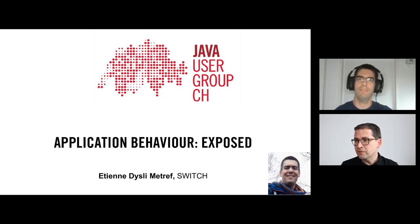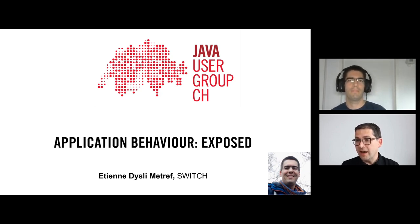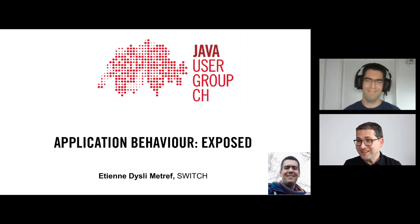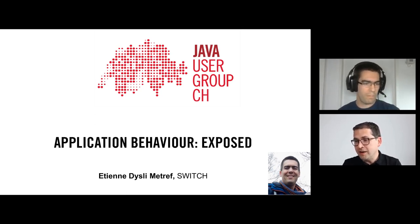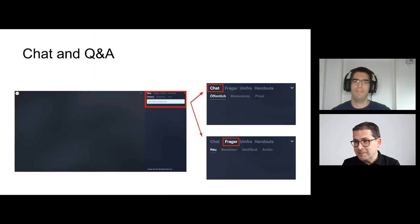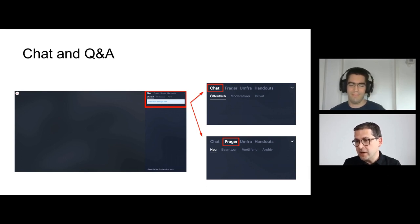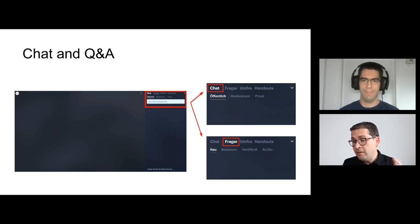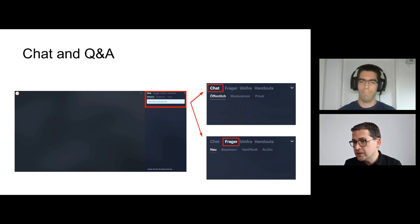Welcome to our Java User Group talk about 'Application Behavior Exposed.' I'm here with Etienne, who will talk about graphs, charts, and visualizing data from production. I'm Patrick from the Java User Group, here to share some administrative things. On the right side in BigMarker we have a chat — use it to say where you're joining from, share links, or report technical problems. For questions, please use the Q&A section.